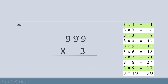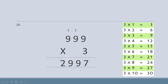Carry two over the next nine. Three nine are twenty-seven plus two — twenty-eight, twenty-nine. Write nine here and carry two over the next column. Again, three multiply nine — twenty-seven plus two — twenty-nine. Write twenty-nine here. So the final answer is two thousand nine hundred and ninety-seven.